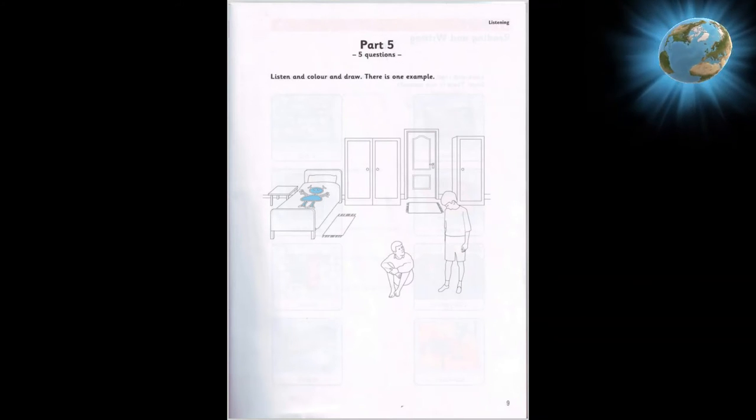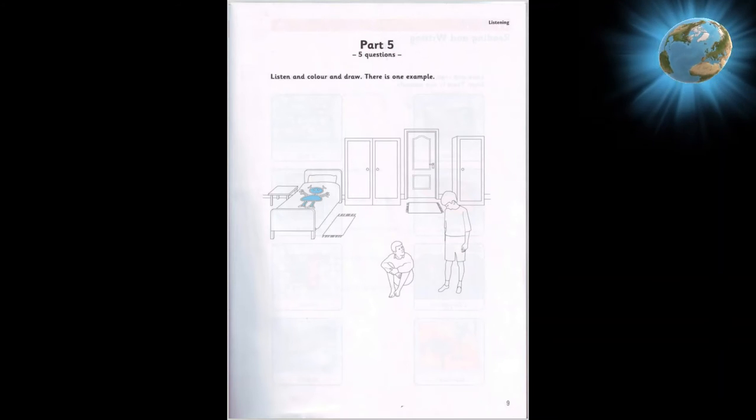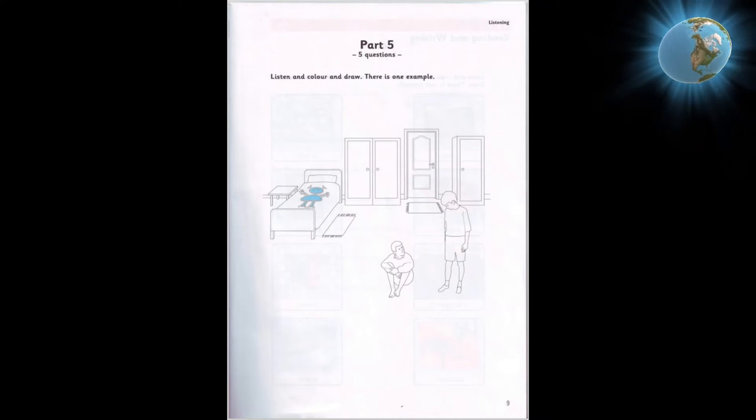There are two cupboards in the room. Can you see them? Yes, a big one and a smaller one. I want you to colour them. What colour? Colour the big cupboard green and the smaller one yellow. OK.